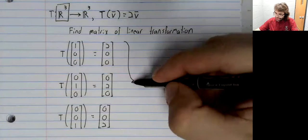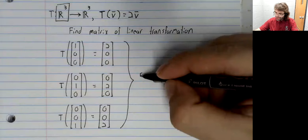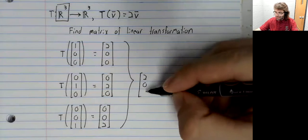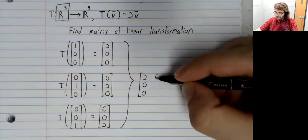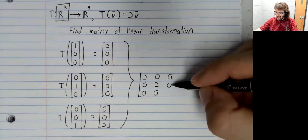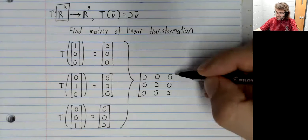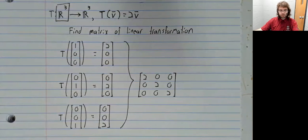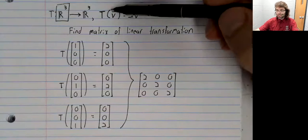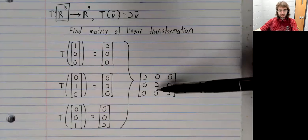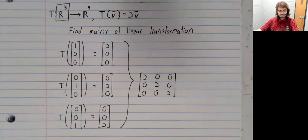And to find the matrix of the linear transformation, these vectors we just found will be the columns of this matrix. So T of V equals this matrix times V.